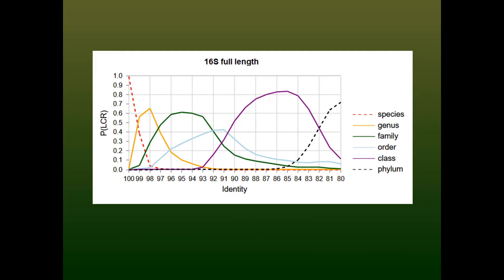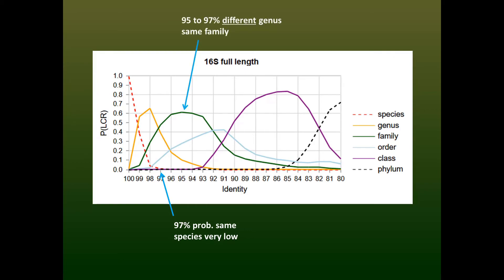Here is the plot for full-length 16S sequences. Notice that at 97% identity, the probability that the sequences belong to the same species is very low, as indicated by the dotted red line. This is consistent with the earlier result that the optimal clustering threshold for species is around 99%. The threshold of 95% is often considered to be an approximation for genus, but from 95% to 97% identity, the sequences are most likely to belong to different genera in the same family. In the range of 91% to 93%, the lowest common rank is ambiguous and could be family, order, or class.